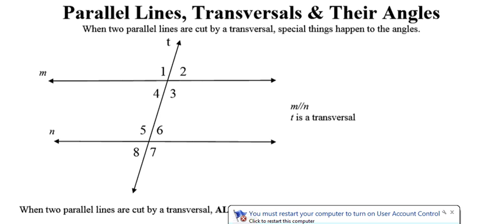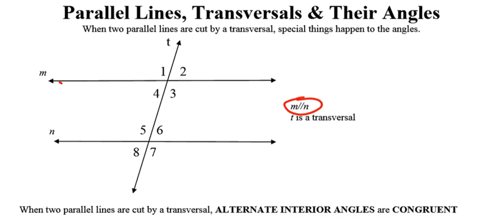So in this problem here, they told us that line M is parallel to line N. We're going to mark that in our picture by putting an arrow going in the same direction on each of those lines. That's our notation indicating that those two lines are parallel to each other.